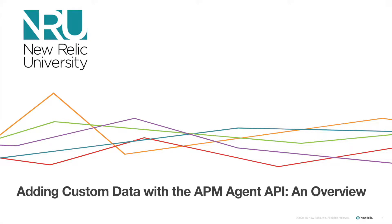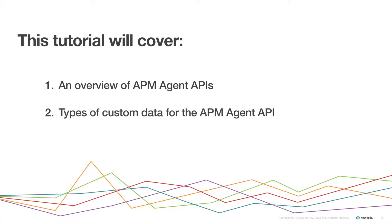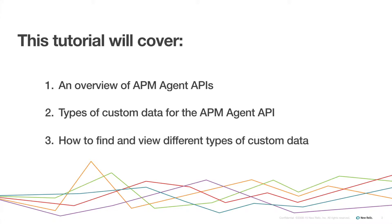The New Relic APM Agent API allows you to record custom data about your app for a more detailed and in-depth view of your app's performance and the ways your users engage with your app. This tutorial will cover an overview of APM Agent APIs, types of custom data that can be added using the APM Agent API, and how to find and view different types of custom data.